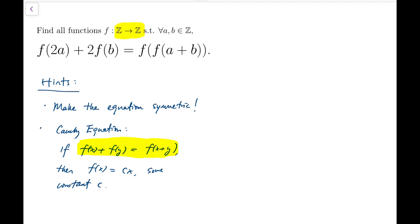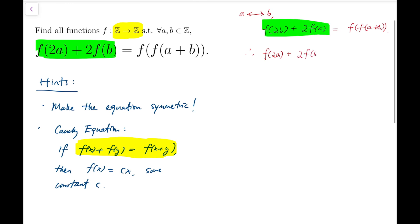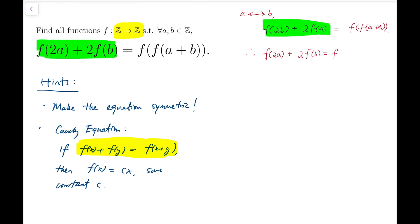The first thing I'm going to do is make the equation symmetric about a and b. I would immediately swap the position of a and b. Then I will have f of 2b plus 2 times f of a equals f of f of a plus b. Notice that the right hand side is symmetric about a and b, while the left hand side is not. So these two parts must be equal, and I managed to get rid of the double f.